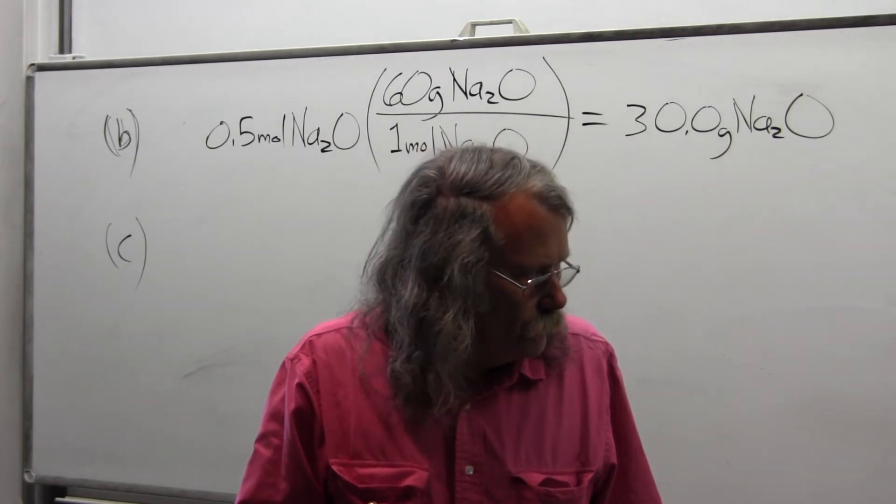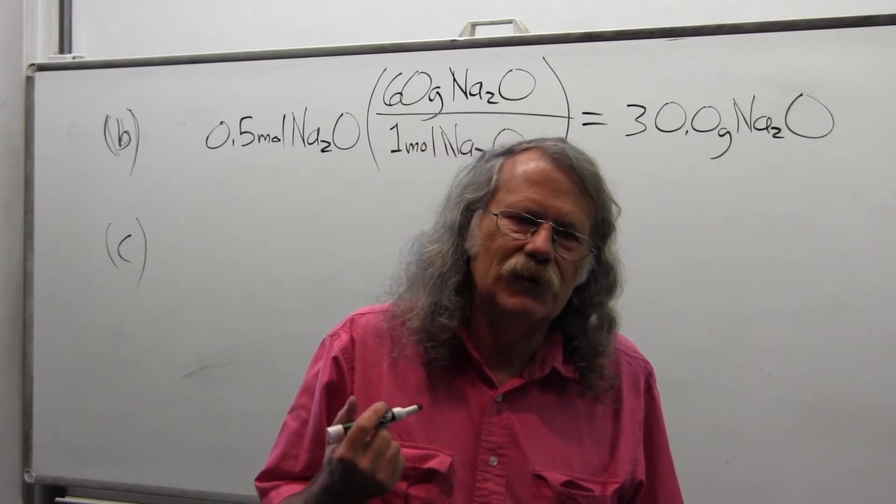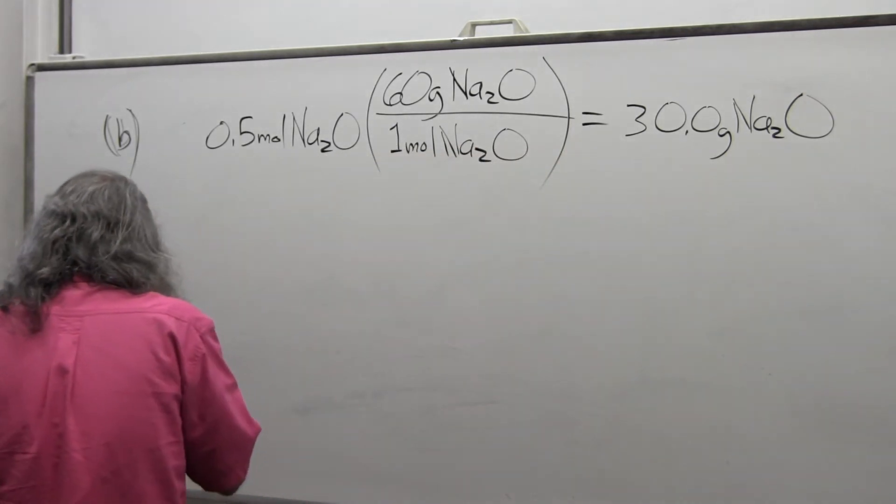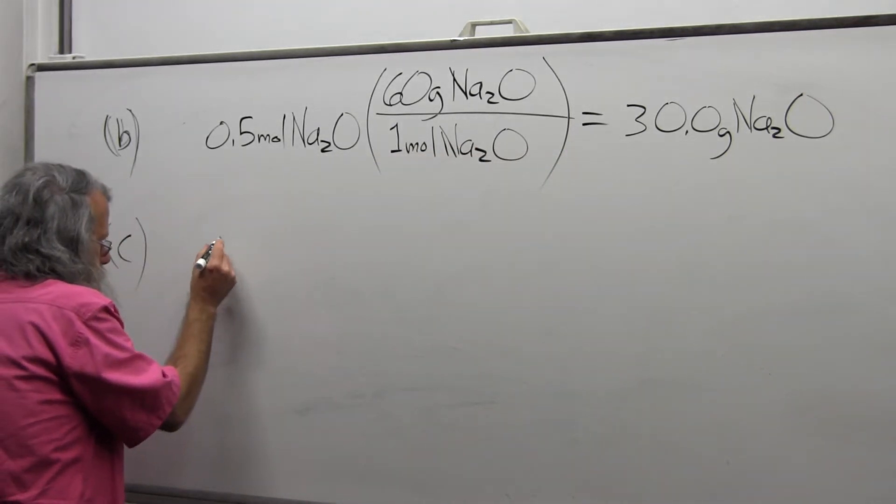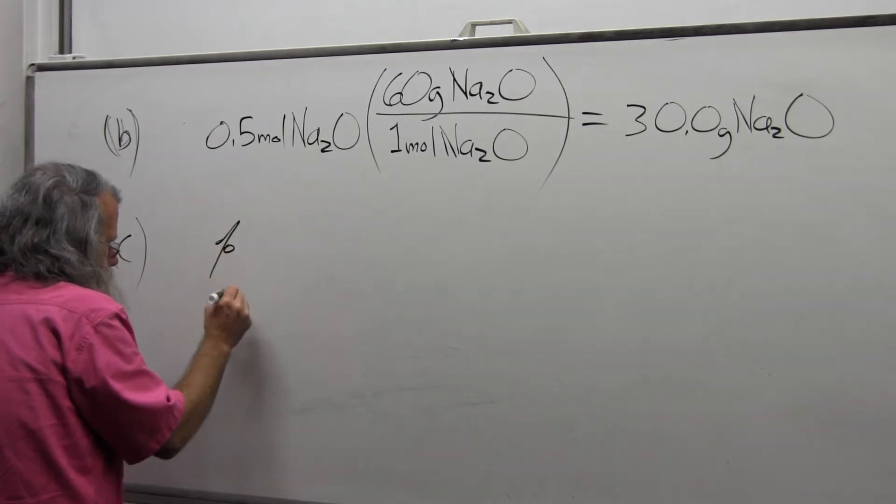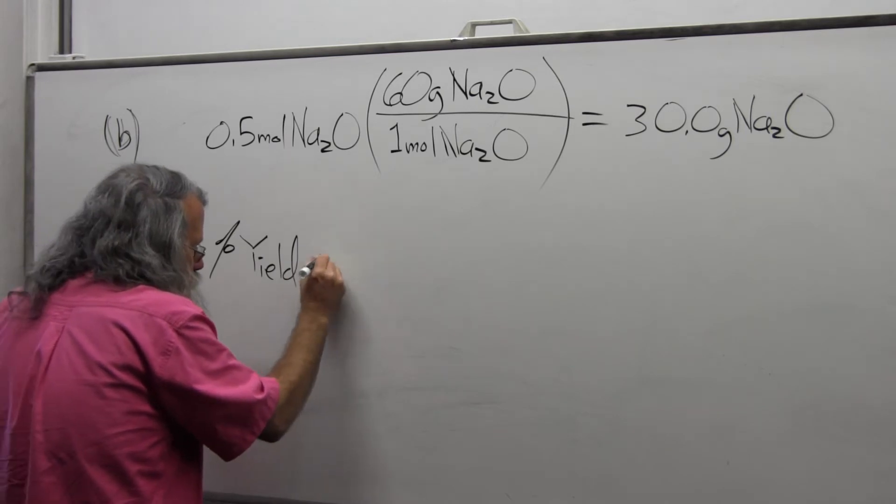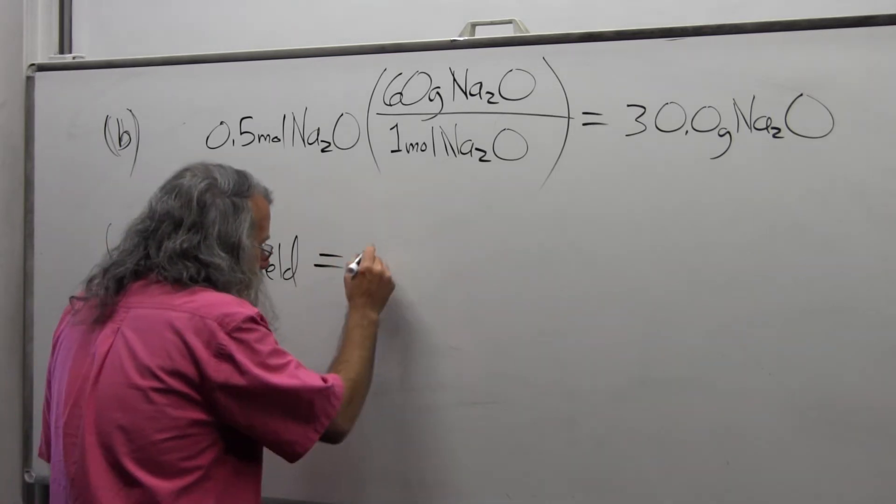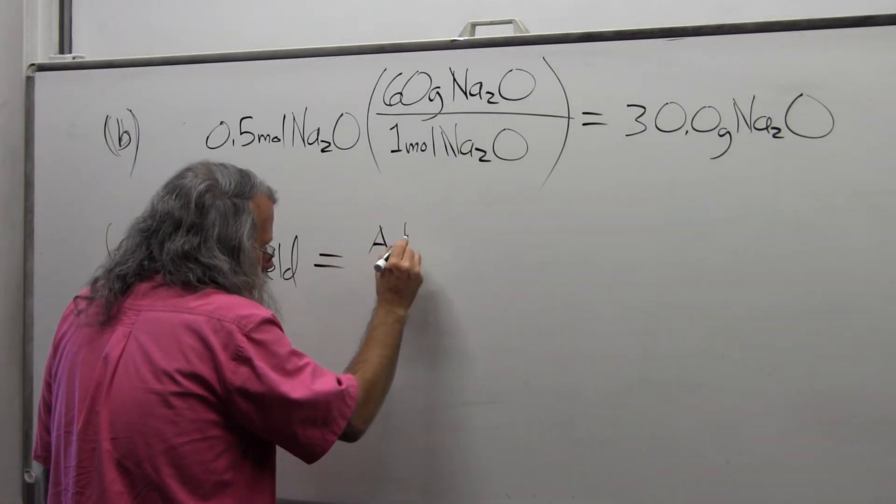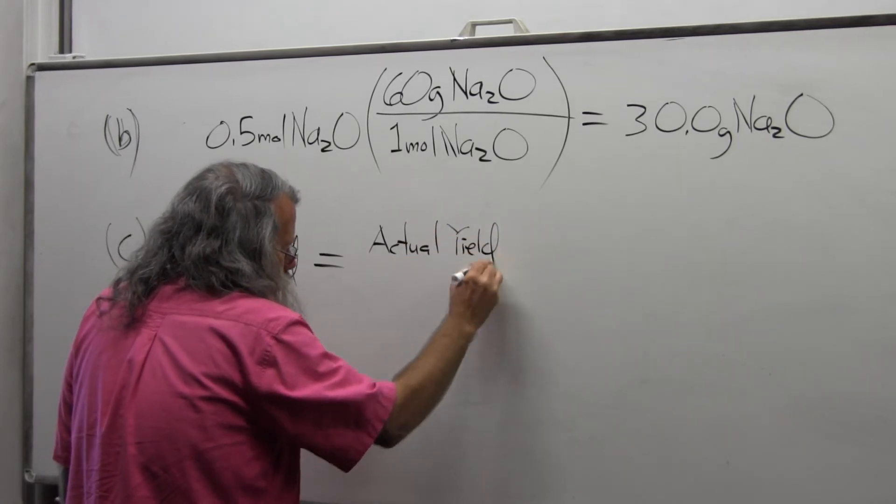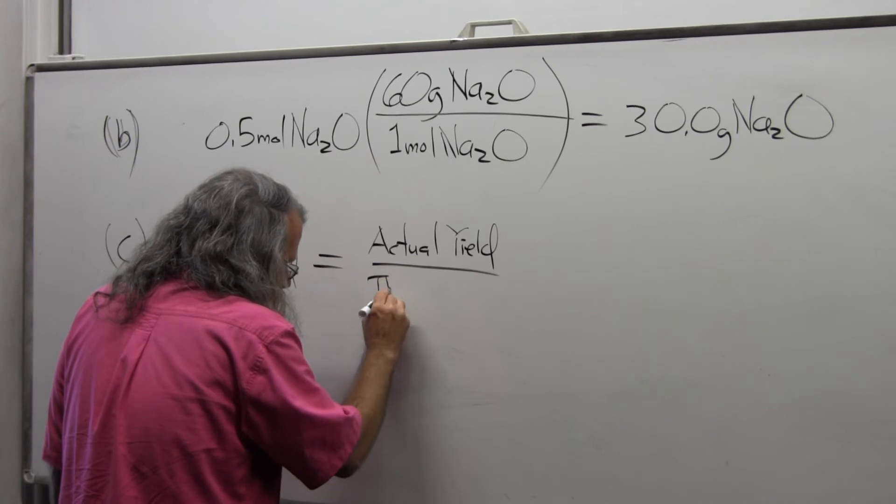Well, percent yield is equal to the actual yield divided by the theoretical yield.